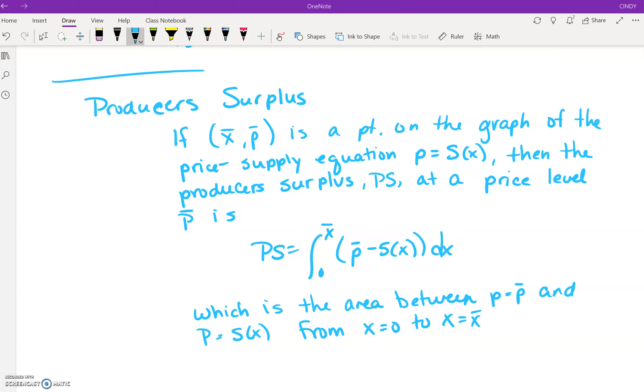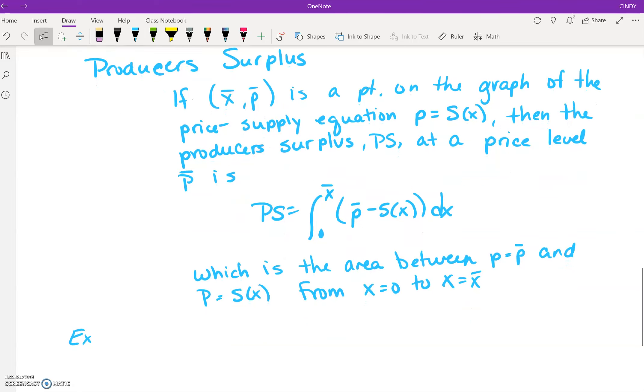The producer's surplus is defined as: if I have a point x̄, p̄ is a point on the graph of the price-supply equation p equals S(x), then the producer's surplus PS at a price level p̄ is given by the equation PS equals an integral between 0 and x̄ of p̄ minus S(x) dx, which is the area between p equals p̄ and p equals S(x) from when x equals 0 to x̄.